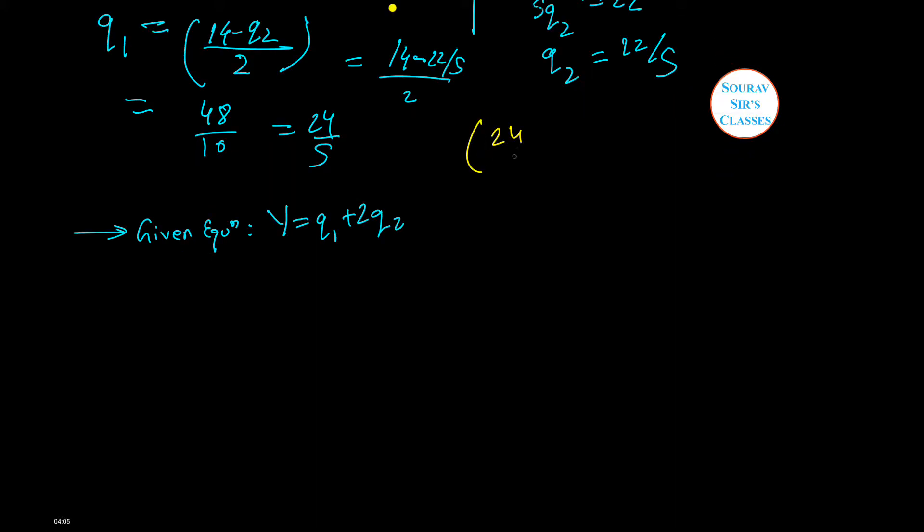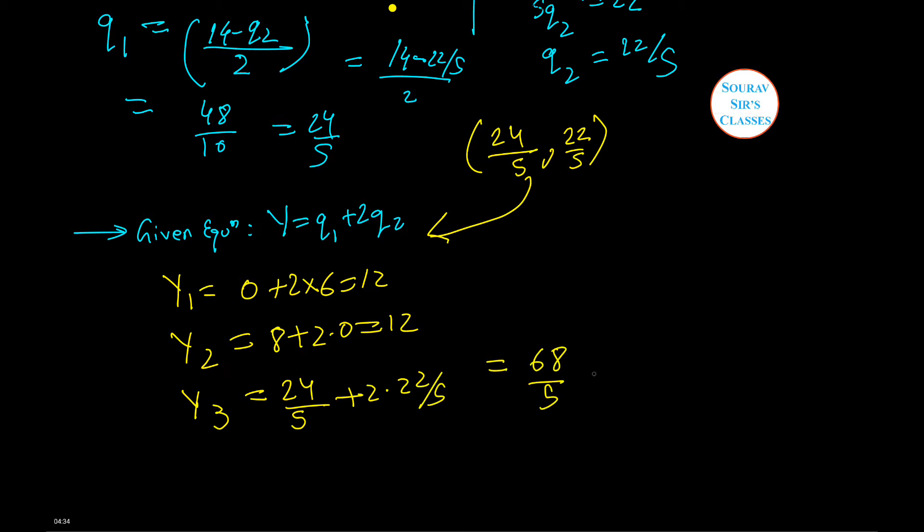Now the values 24 by 5 and 22 by 5 are put into our objective equation. Y1 equals 0 plus 2 into 6 which is equal to 12. Y2 equals 8 plus 2 into 0 which is equal to 12. Y3 equals 24 by 5 plus 2 into 22 by 5 which is nothing but 68 by 5 which is the maximum value.